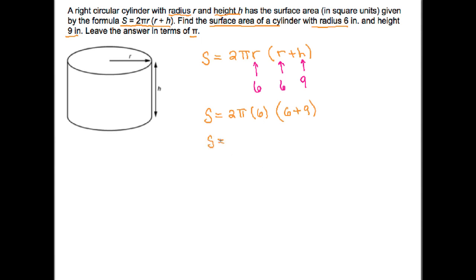Now it doesn't matter the order that I multiply, so 2 times 6 is 12, so I have 12 pi times 15. And that's the same as taking 12 times 15 times pi. It looks like my surface area is equal to 180 pi.